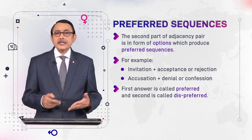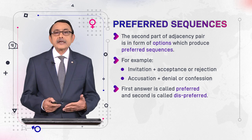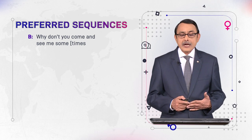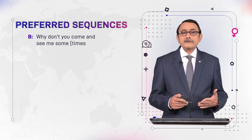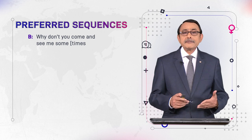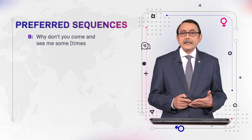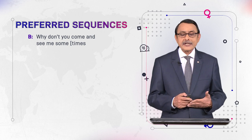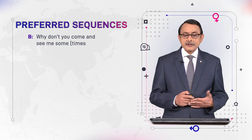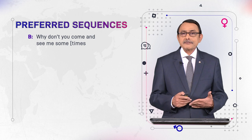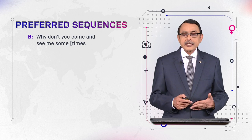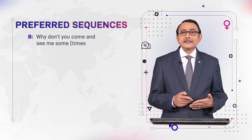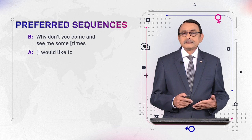The first answer in these examples is preferred and the second is dispreferred. Now see this dialogue. This is a transcription of some dialogue — that is why you see brackets here. Square brackets show that speaker B and speaker A overlap; they speak simultaneously. From a certain point onward, speaker B's answer is not complete but speaker A interrupts and completes the utterance, saying 'I would like to.' This is overlap.